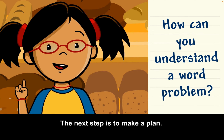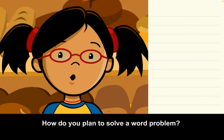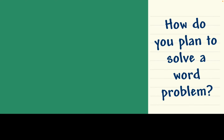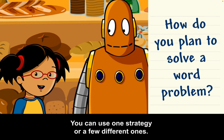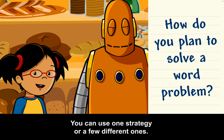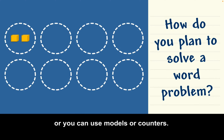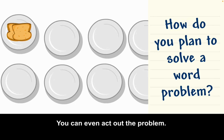The next step is to make a plan. How do you plan to solve a word problem? A strategy is a plan for solving a problem or reaching a goal. You can use one strategy or a few different ones. You can draw pictures, use models or counters, or even act out the problem.